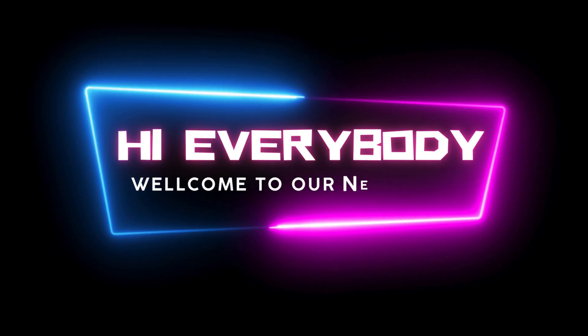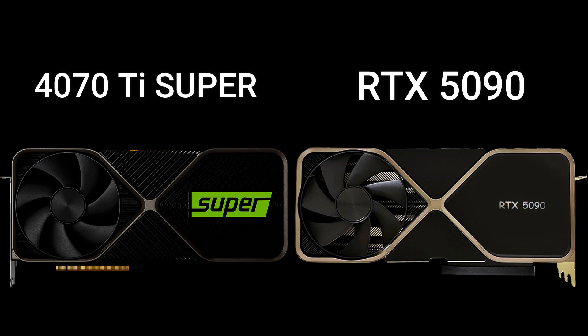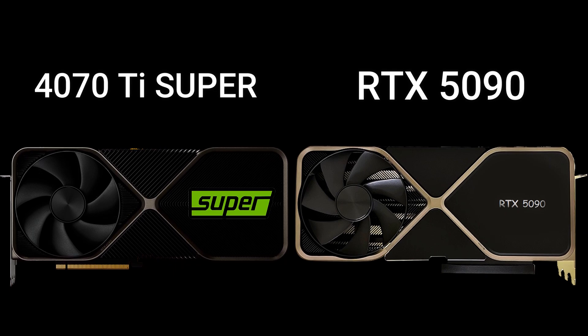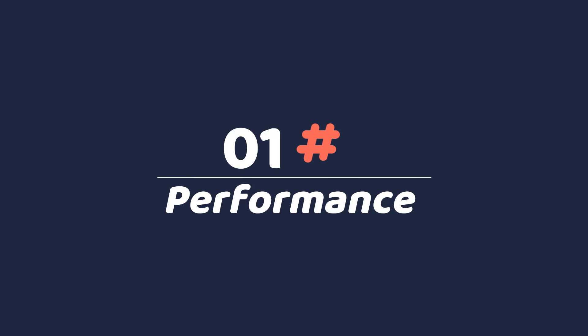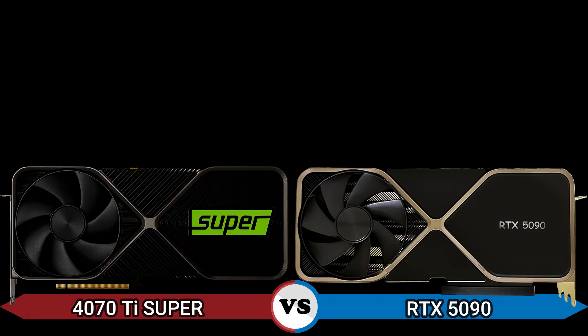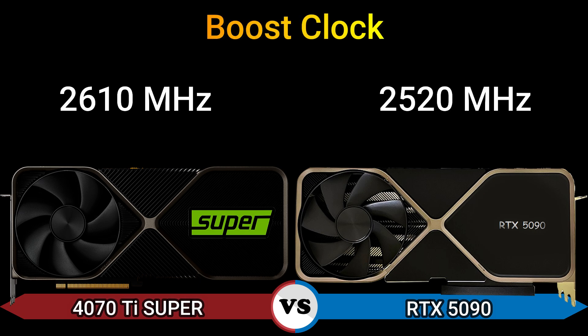Hi everybody, welcome to our new video. Today I will compare two GPUs in this video, so let's go. Firstly, we start with performance: base clock 2340 MHz and 2235 MHz, boost clock 2610 MHz and 2520 MHz.